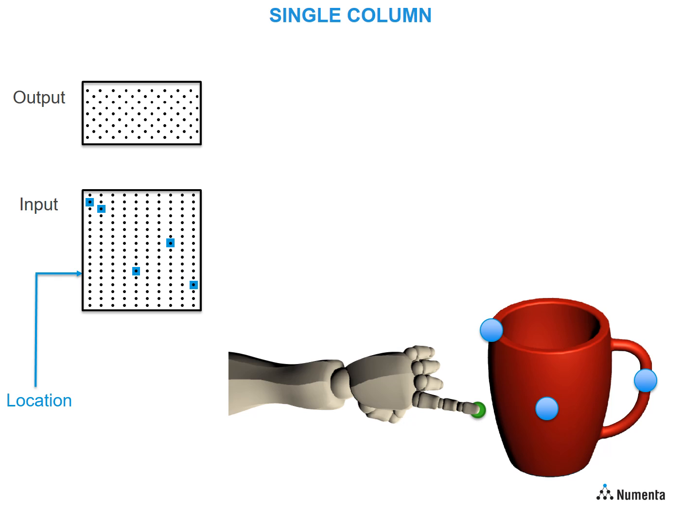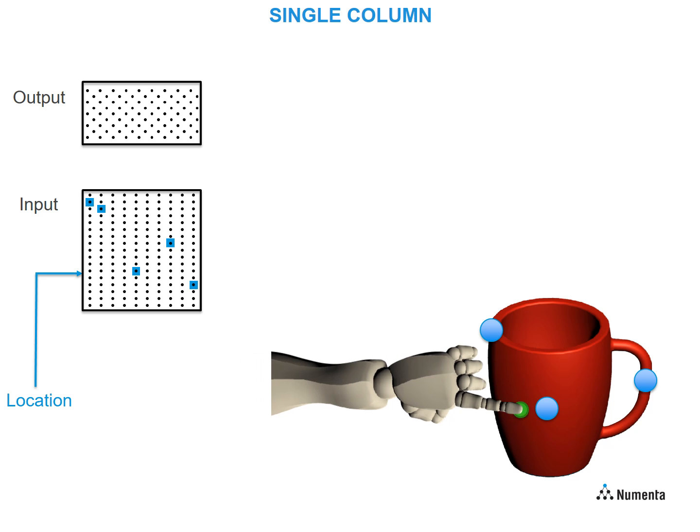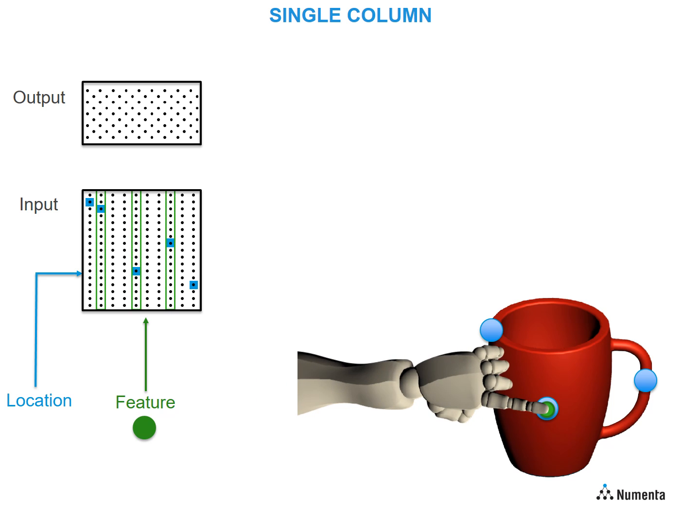This represents a prediction of the feature that will be sensed. When the finger touches the first spot, the sensory input activates a set of mini-columns in the input layer. Cells in these mini-columns that were also predicted by the location signal become active. These cells are shown in pink.